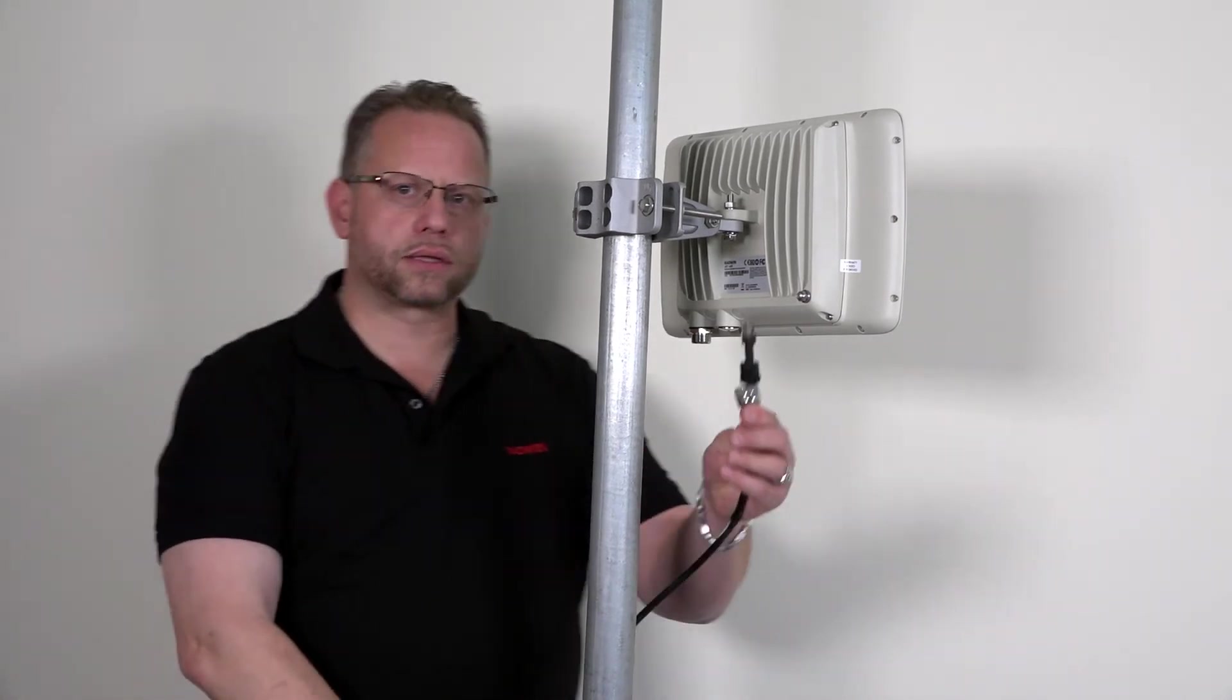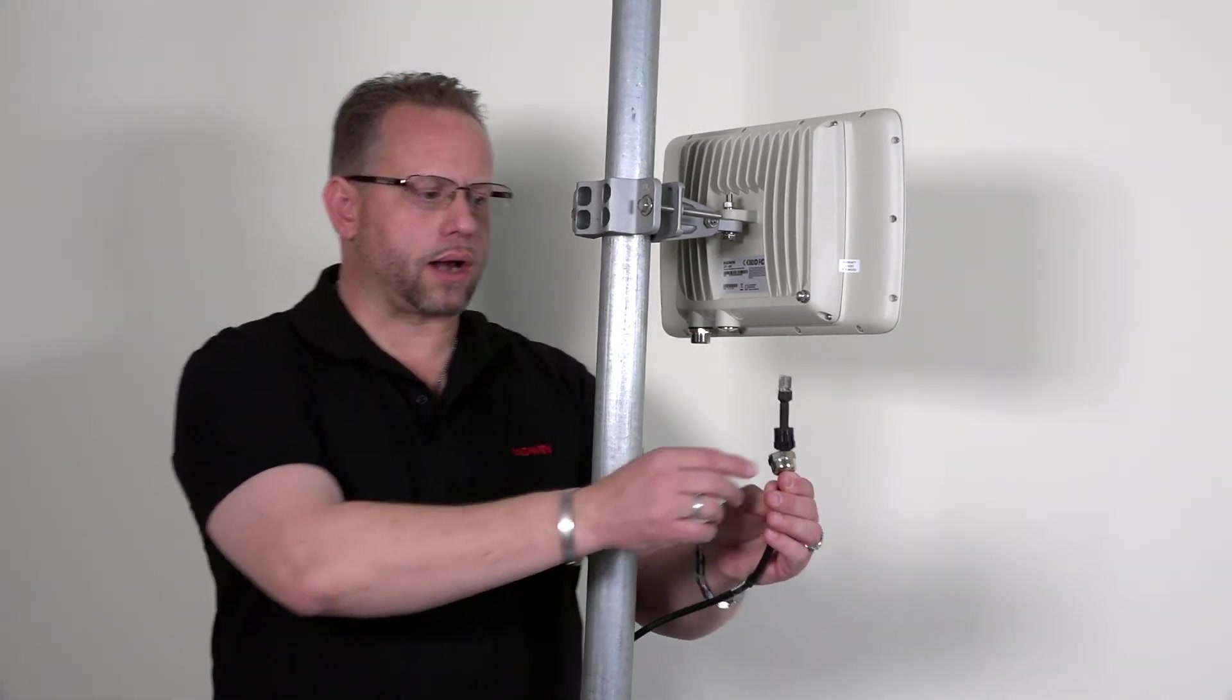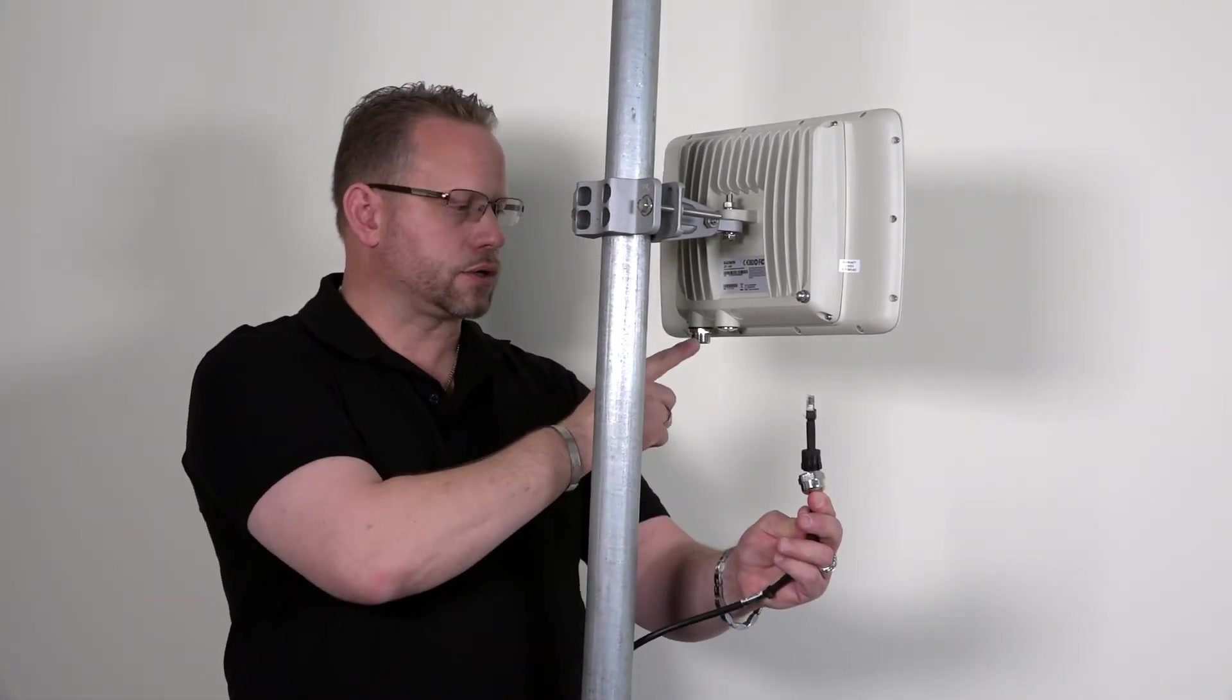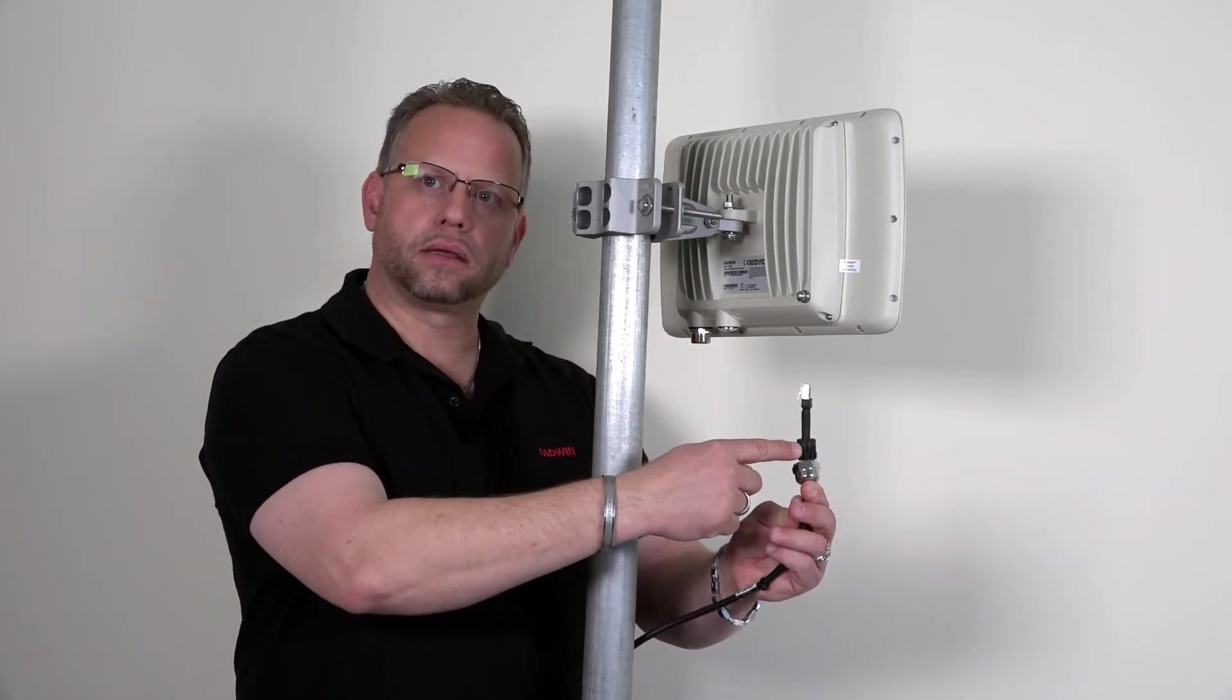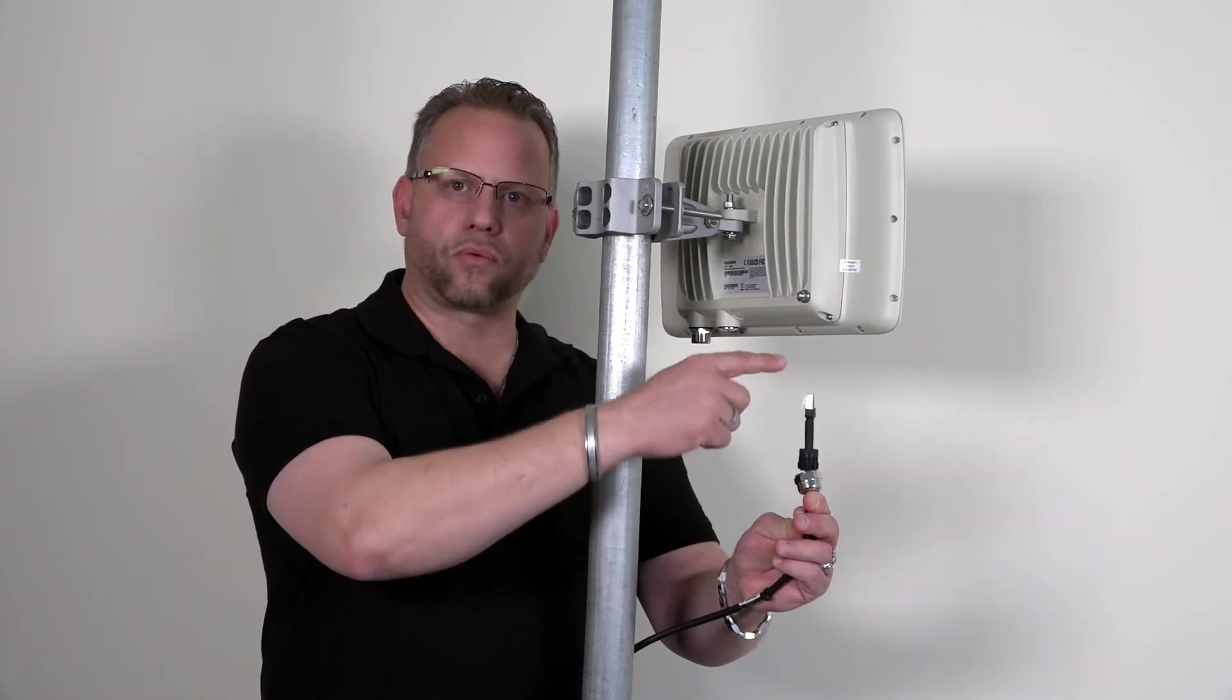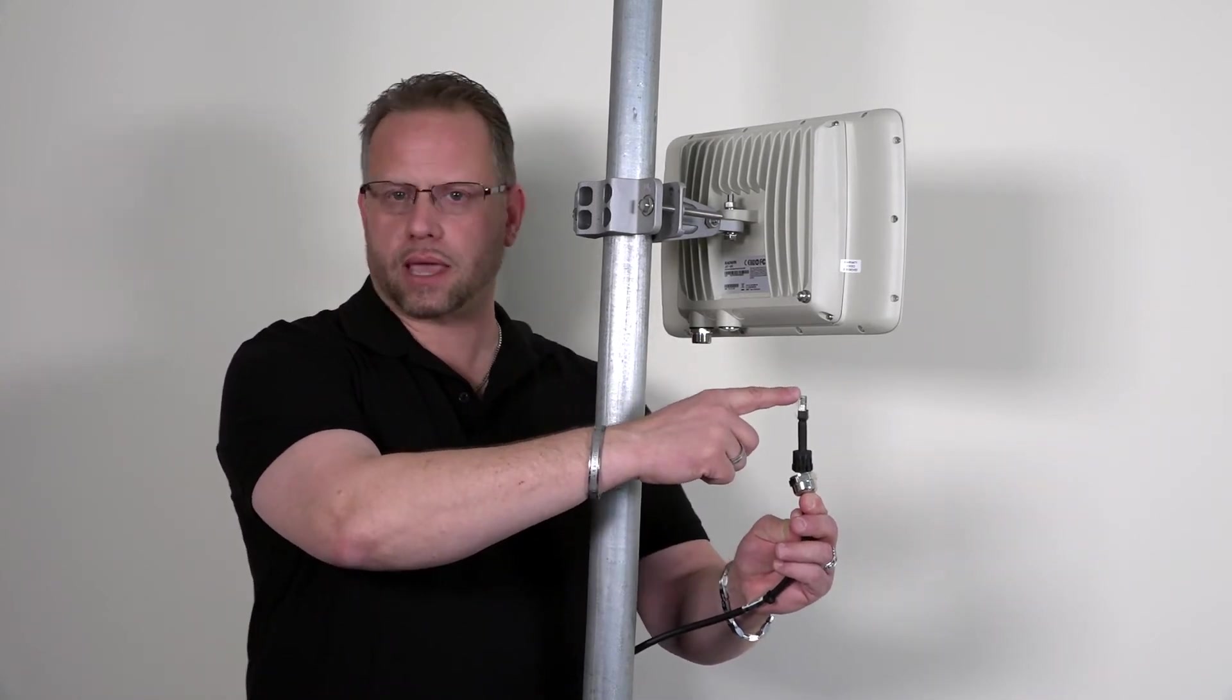Inside the box the Radwin product line comes with the connector, the cap and the gland to insert the RJ45 on the Cat5e cable.